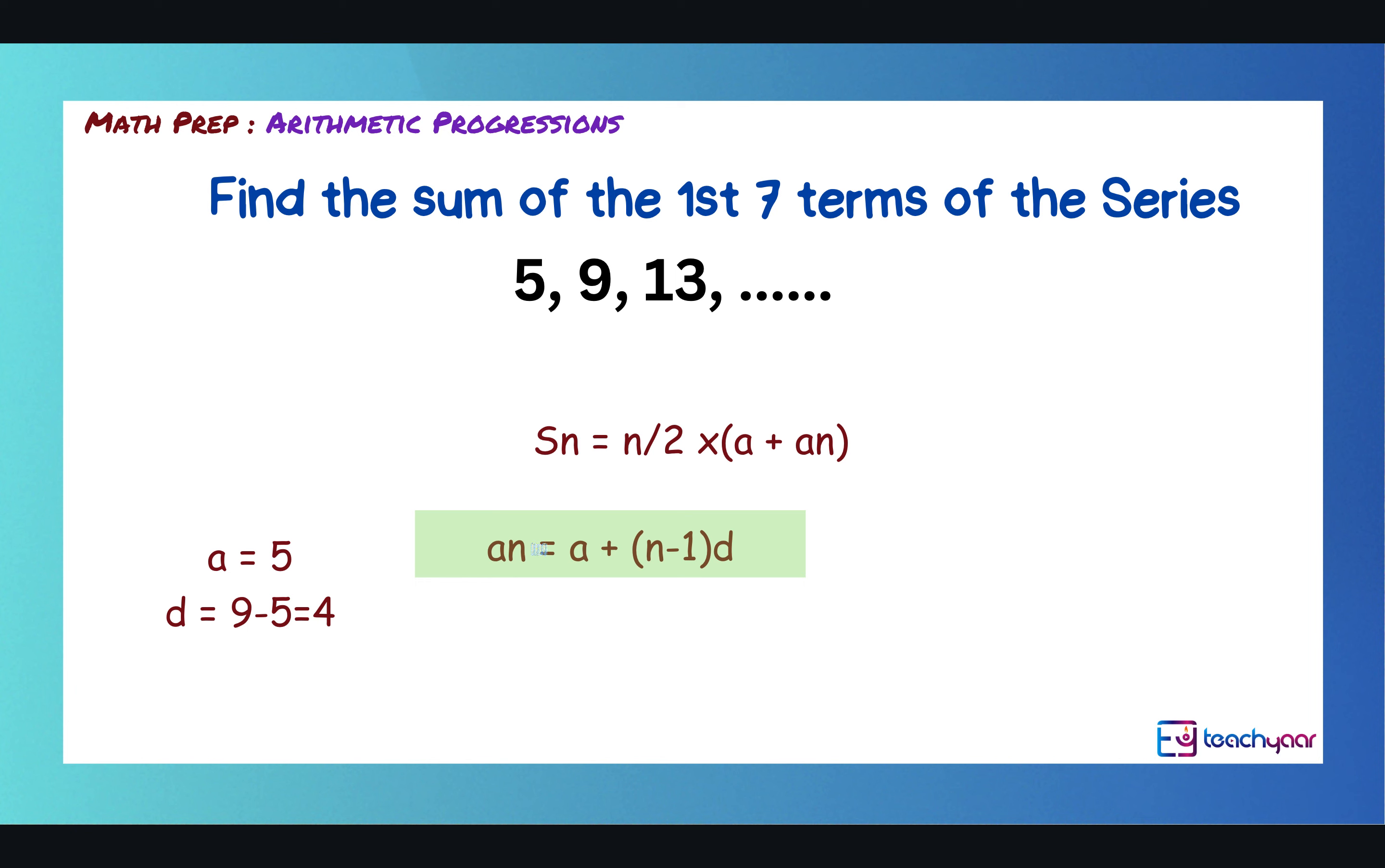And so, now the nth term can be given as a + (n-1)d. So, a7 is given as a, which is 5, plus (n-1), so 7 minus 1 is 6 times d is 4. 6 times 4 is 24 plus 5 is 29. So, now we have got a7 as 29.